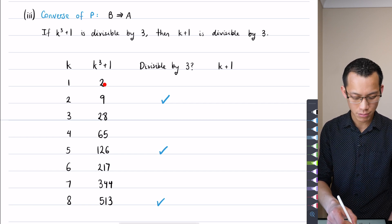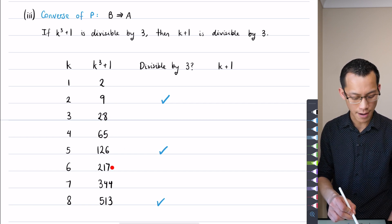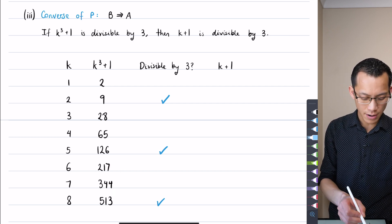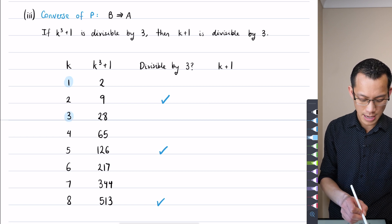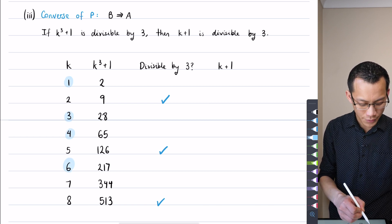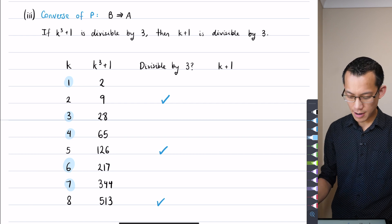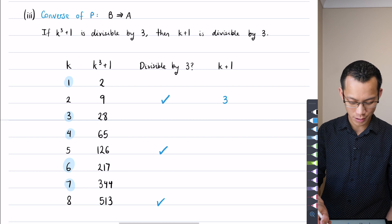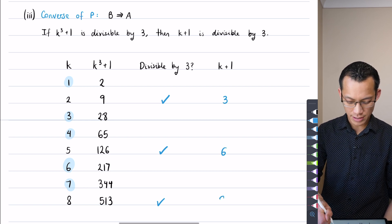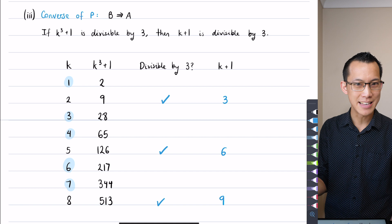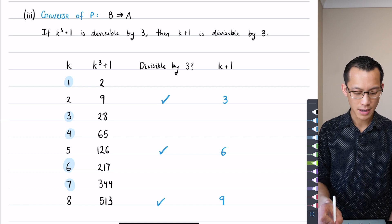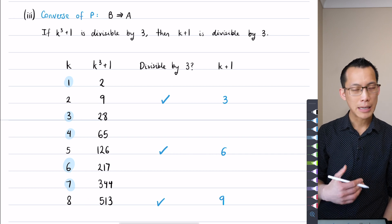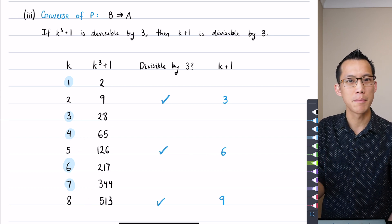Importantly, none of the other ones are: 2 is a dud, 28, 65, 217, 344. Even though these are all duds, it's very important to test these because they could have given us a counter example. Because when you look at what is k+1, it's no surprises here: we get 3, 6, and 9. So k+1 is divisible by 3 in each of these cases.